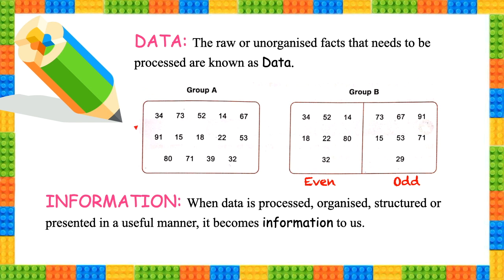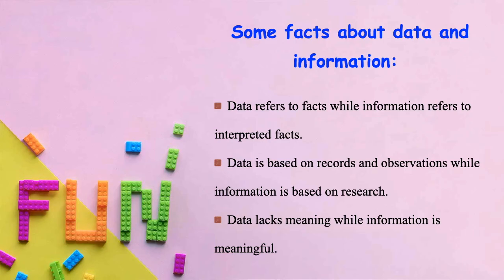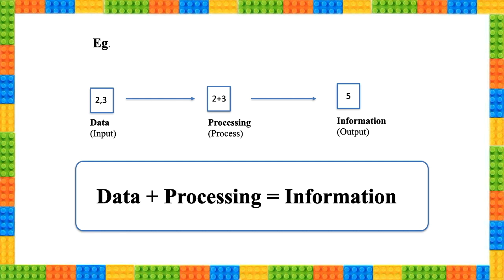Let's learn some facts about data and information. Data refers to facts, while information refers to interpreted facts. Data is based on records and observations, while information is based on research. Data lacks meaning, while information is meaningful. When we apply some process to data, we get information.